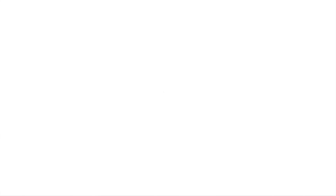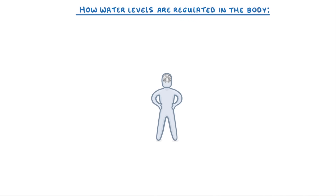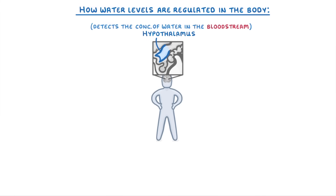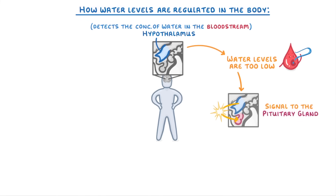The last thing we need to cover is how water levels are regulated in the body. Inside the brain, there's a structure called the hypothalamus, which detects the concentration of water in the bloodstream. If it detects that the water levels in the body are too low, like if we're dehydrated, then it sends a signal to the pituitary gland, which sits just in front of the brain behind our eyes. The signals tell the pituitary gland to release a hormone called ADH, or antidiuretic hormone, into the bloodstream.